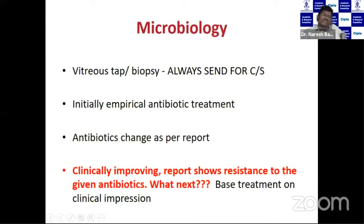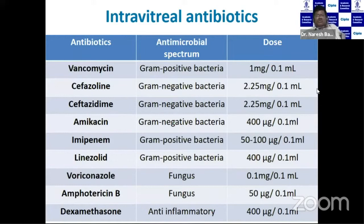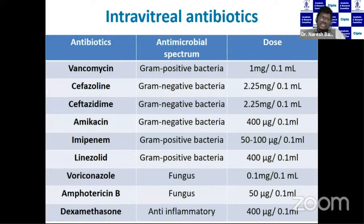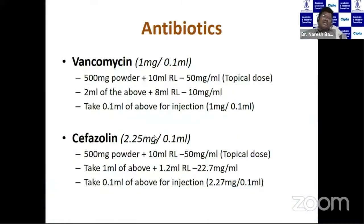Microbiological examination is important — always send the vitreous sample for culture sensitivity. Initially treat with empirical antibiotics, then change as per the culture report. The most commonly used antibiotics are vancomycin and ceftazidime. Vancomycin is used as 1 mg in 0.1 ml, and ceftazidime as 2.25 mg in 0.1 ml. For Burkholderia, tazobactam-piperacillin has been found effective. The key rule is that dilution should not exceed 10 times at any point.